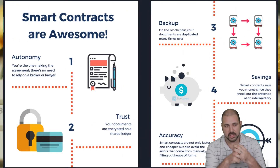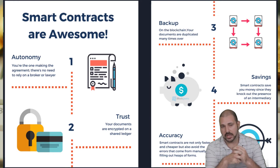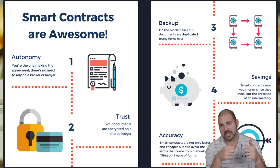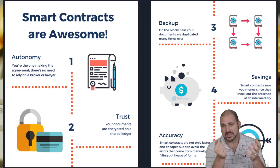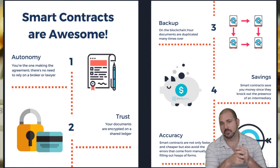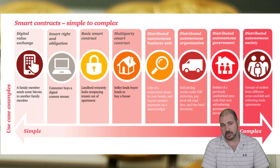Smart contracts are pretty cool. Autonomy — you're the one making the agreement, you don't need a lawyer or broker, so you cut out the middleman. There's trust because your documents are encrypted on a shared distributed ledger. On the blockchain your documents are duplicated over multiple nodes — multiple computers verify transactions, verify the contract is real, and execute the transaction. It saves money by removing the middleman, and there are no human errors when filling out forms.